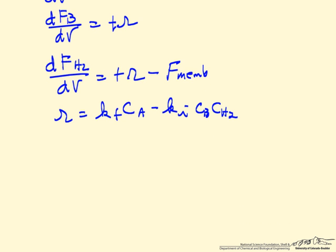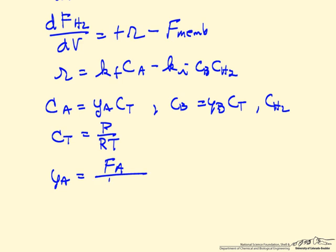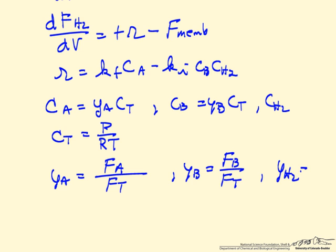We need equations for the concentrations. The concentration of A is the mole fraction of A times the total concentration. For ideal gases, total concentration is P over RT. There are similar expressions for concentration of B and concentration of hydrogen. Mole fractions are related to molar flow rates: mole fraction of A is the molar flow rate of A over the total flow rate, and likewise for B and hydrogen.